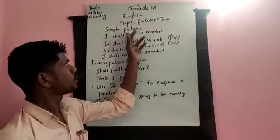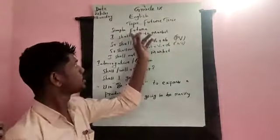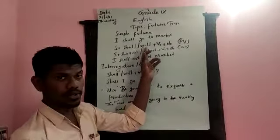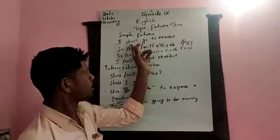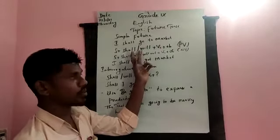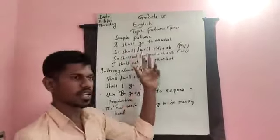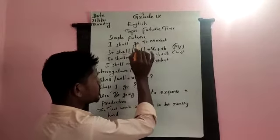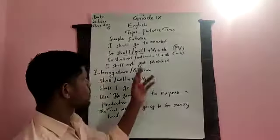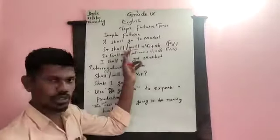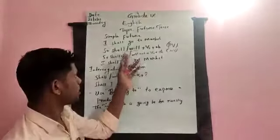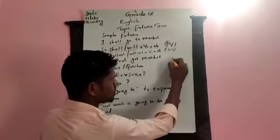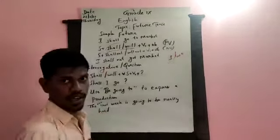What is the structure for simple future? I will give you an example: 'I shall go to market.' Shall and will are used in future tense. You might wonder when to use shall or will. No need to worry — will and shall can be used with all subjects. In older usage, shall was used with I, we, you, they, and others. But nowadays we concentrate shall only for the first person — I and we.